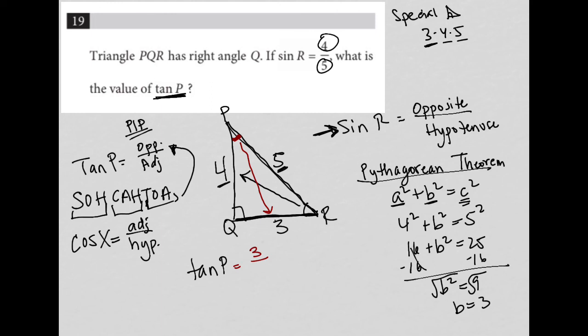And then the adjacent, which is not the hypotenuse, so the other remaining side, the adjacent to angle P is here, so four. So my answer is three fourths.